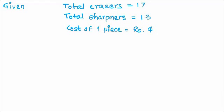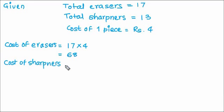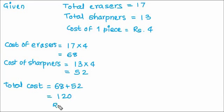We can do it in two ways. First, we can calculate the cost of erasers is equal to 17 multiplied by 4. Because there are 17 and we are multiplying by 4 which is the cost of one eraser. So, 17 fours are 68 and cost of sharpeners is 13 multiplied by 4 which is equal to 52. So, the total cost would be Rs.120. This is one way.